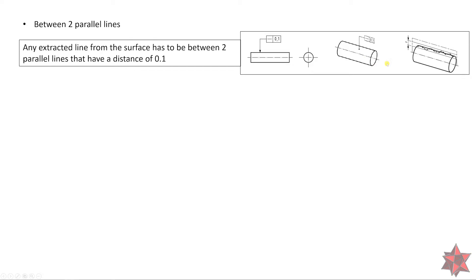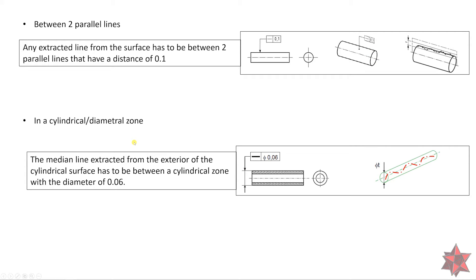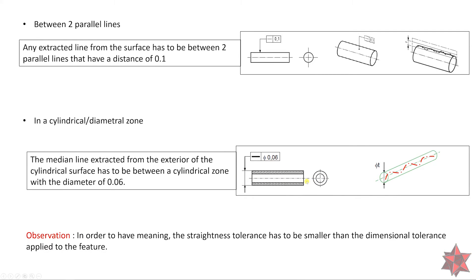Wherever on the surface of the cylinder you take the lines, they have to be between two parallel lines with a distance of 0.1 between them. Or, in a cylindrical diameter zone, the median line extracted from the exterior of the cylindrical surface has to be within a cylindrical tolerance zone with a diameter of 0.06 millimeters. In order to have meaning, the straightness tolerance has to be smaller than the dimension tolerance applied to the feature.